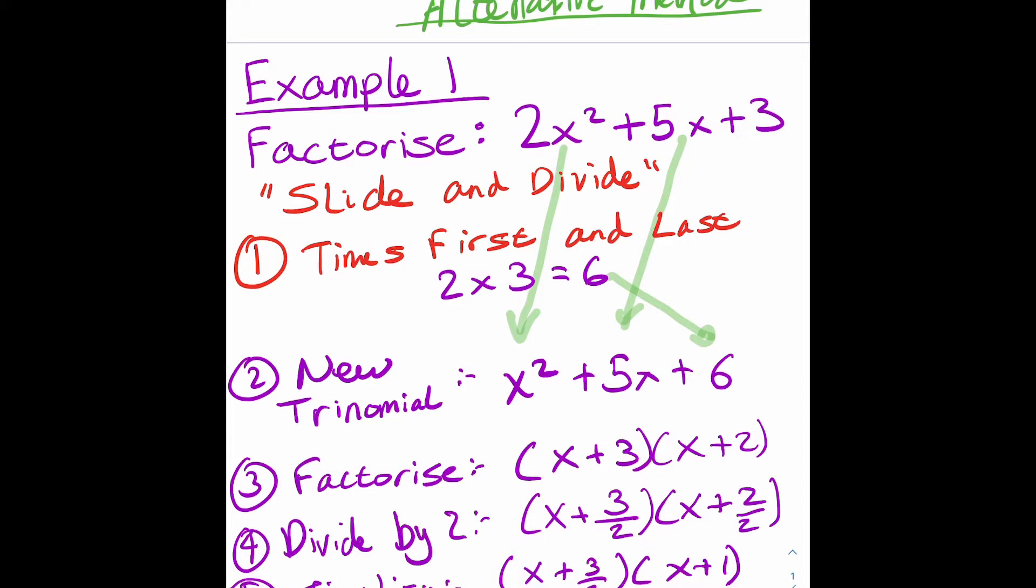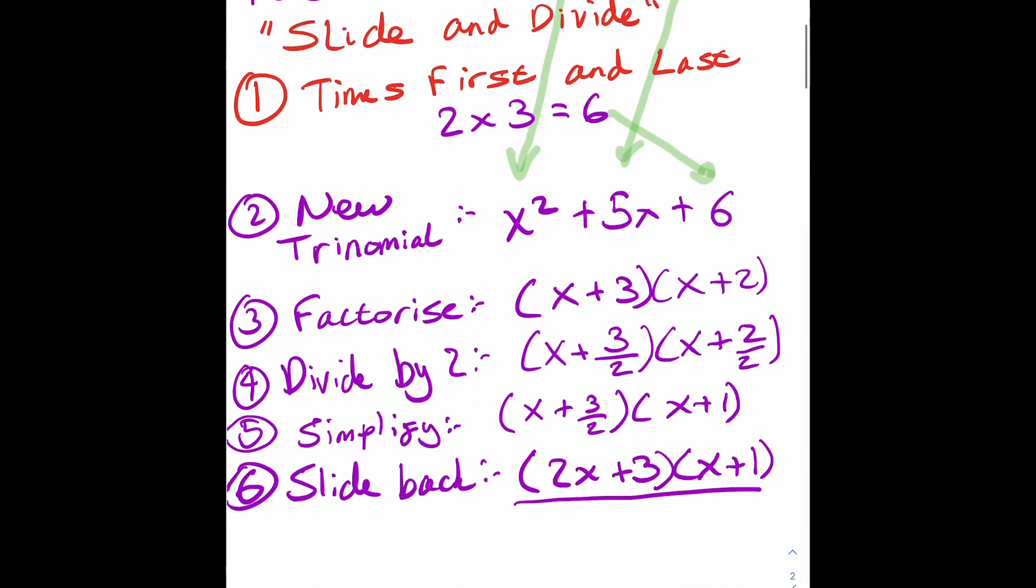The last step is then to slide back. So any denominators, any bottoms of a fraction, just slide back in front of the x and the top stays where it is. So the first bracket becomes 2x plus 3, and then the next one stays as x plus 1 because there's no fraction there.